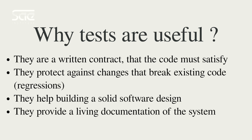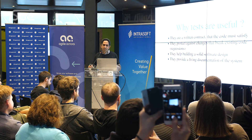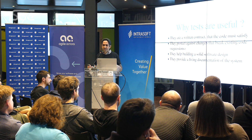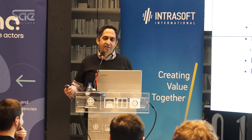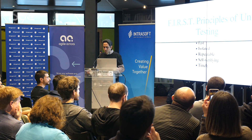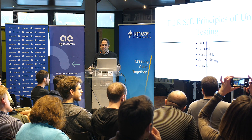Tests are useful because they are a written contract that the code must satisfy. They protect against changes of the code that might break the application — that is, regressions. Moreover, they help build a more solid software design and they provide living documentation of the system. For example, if we have a large project covered with unit tests, a new member reading the unit tests can understand what the application does. In order to write good unit tests, we have to follow some best practices and guidelines.